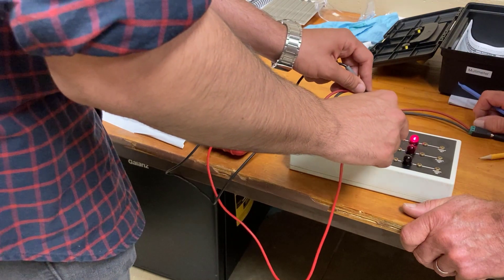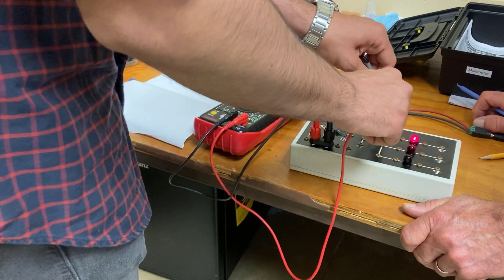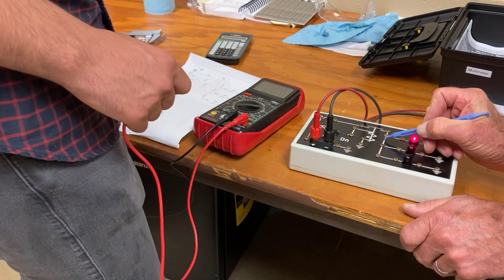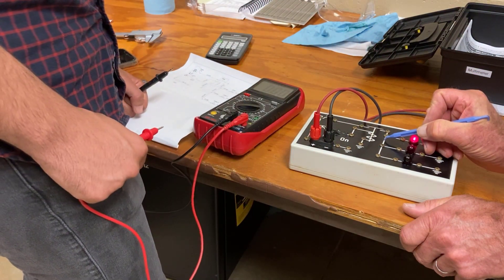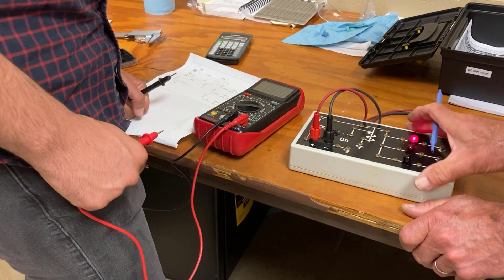Zero. That one measures zero because it's good. Measure from here to here. You'll get 12 because that's the bad wire. You'll get a 12 volt reading.